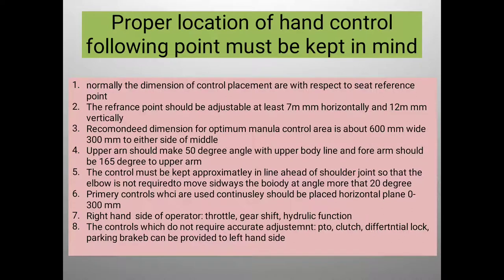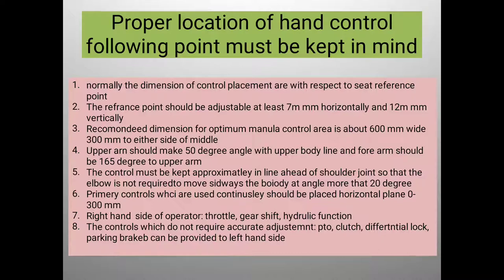Primary controls used continuously should be placed on a horizontal plane 0 to 300 millimeters on the right-hand side of the operator. These include throttle, gear shift, and hydraulic functions. Controls that do not require accurate adjustment and are used occasionally — such as PTO shaft, clutch, differential lock, and parking brake — are provided on the left side.